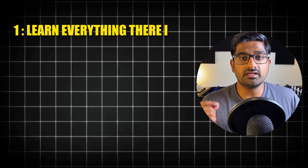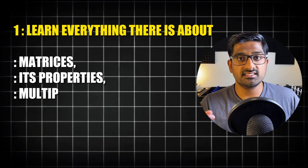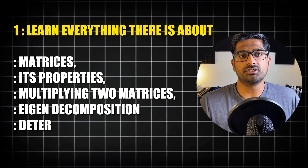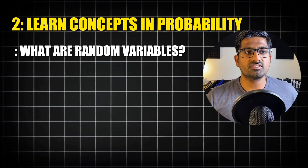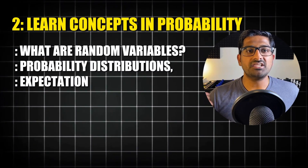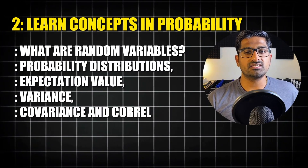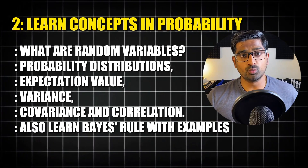Now let's get to the list of concepts that you need to learn. Number one: learn everything there is about matrices — its properties, multiplying two matrices, eigen decomposition, and determinant. You will need this to analyze and process data and also do things like PCA. Then learn concepts in probability: what are random variables, what are probability distributions, expectation value, variance, covariance and correlation. Also learn Bayes' rule with some examples. You need probability to understand your data and the results from your models.